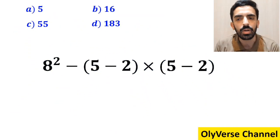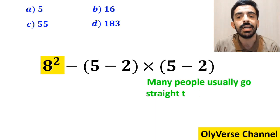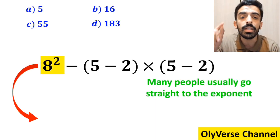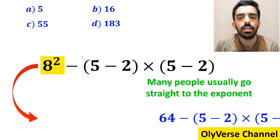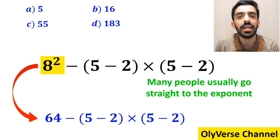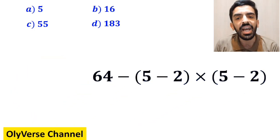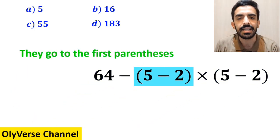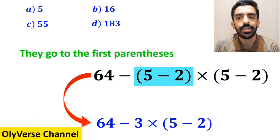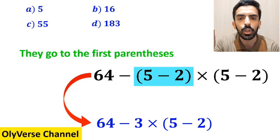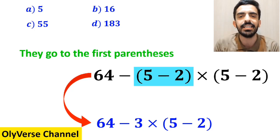In the first step to solve this question, many people usually go straight to the exponent and write the whole expression in the following form: 64 minus 5 minus 2 inside the parenthesis, then times 5 minus 2 inside the parenthesis again. Then they go to the first parenthesis and instead of this expression, they write 64 minus 3 multiplied by 5 minus 2 inside the parenthesis.